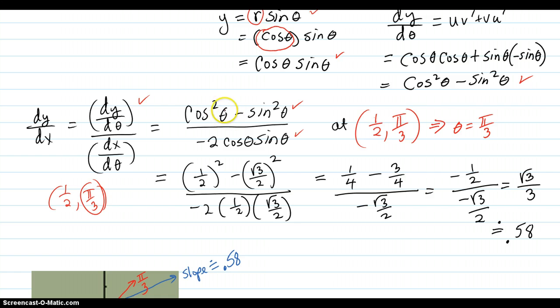So the angle is pi over three. Plug in pi over three into cosine, you get the one-half, one-half squared. And plugging in the sine, sine of pi over three is square root of three over two. And so on the bottom, cosine theta is one-half, sine theta is square root of three over two.